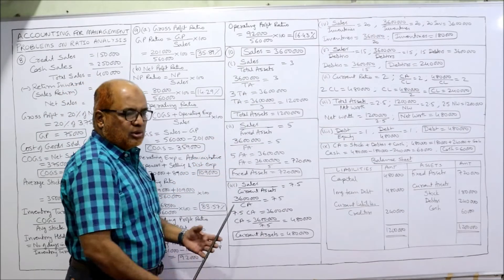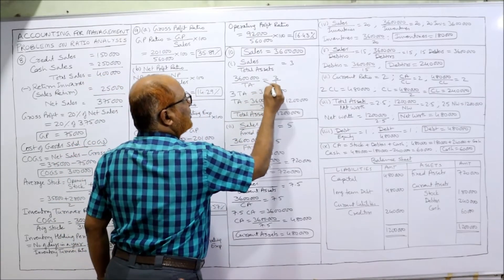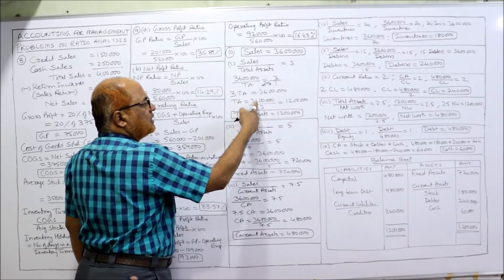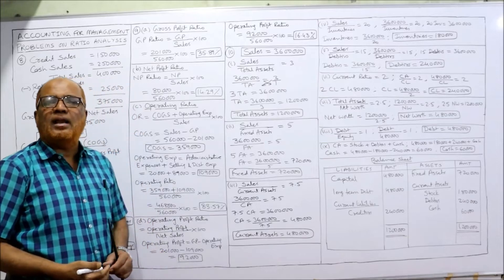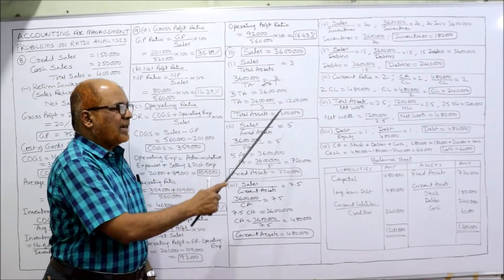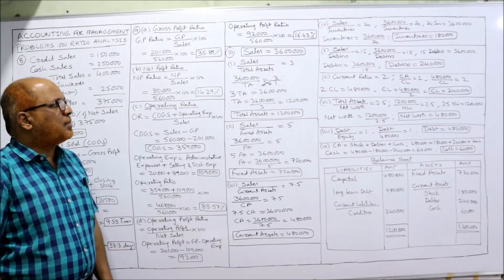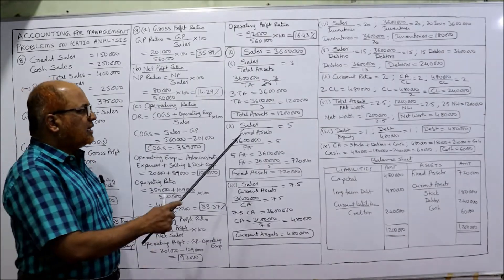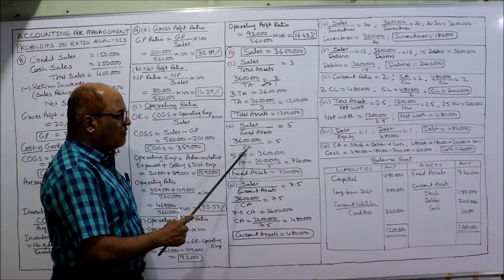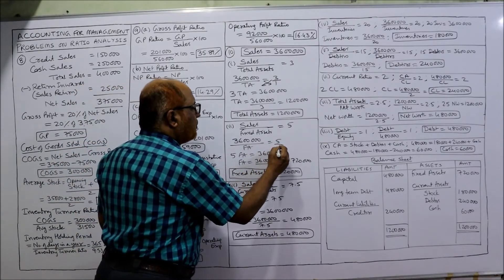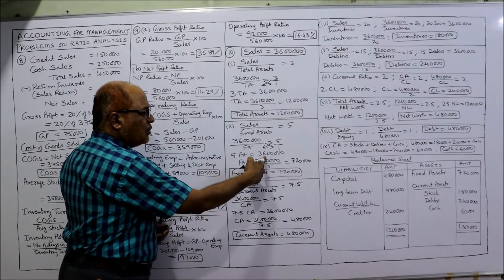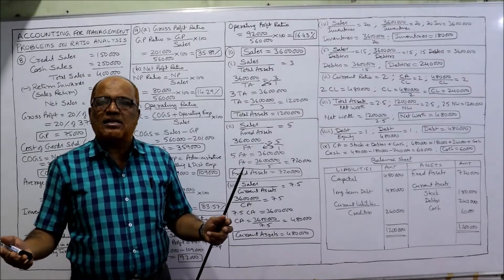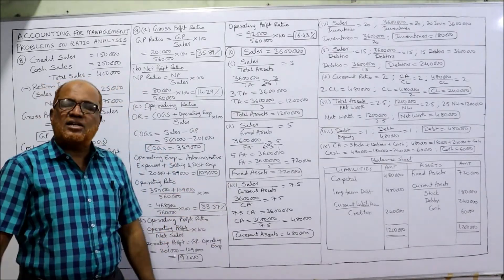First ratio: sales by total assets = 3. Sales are 36 lakhs, so 36 lakh divided by total assets = 3. Cross multiply: total assets = 36 lakh divided by 3 = 12 lakhs. Second ratio: sales by fixed assets = 5. So 36 lakh divided by fixed assets = 5. Cross multiply: fixed assets = 36 lakh divided by 5 = 7,20,000.